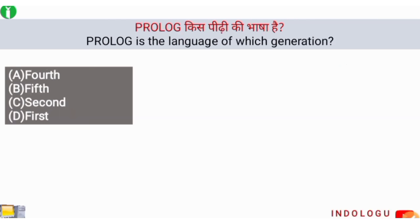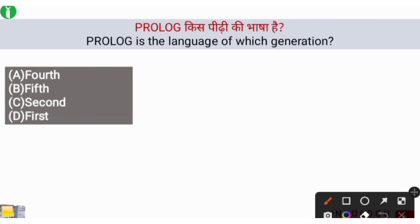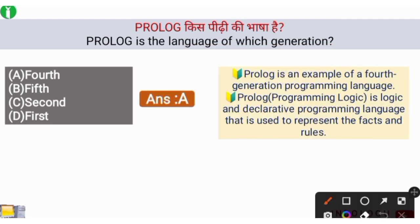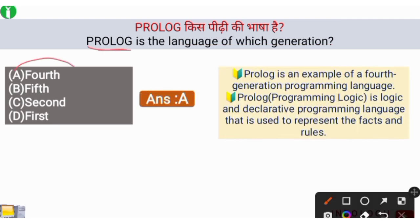Next question: Prolog is the language of which generation? The right answer is option A, fourth generation. Prolog is an example of a fourth generation programming language. Prolog is a logic and declarative programming language that is used to represent facts and rules.